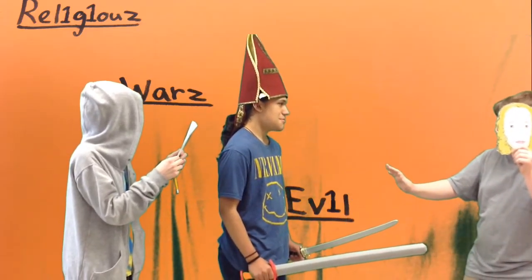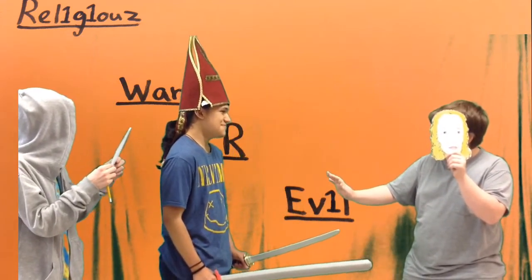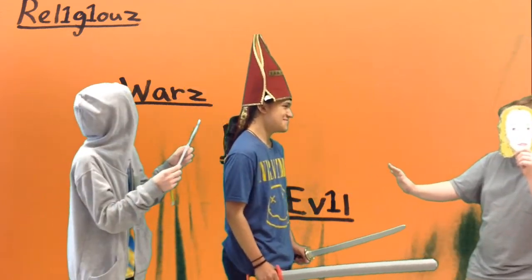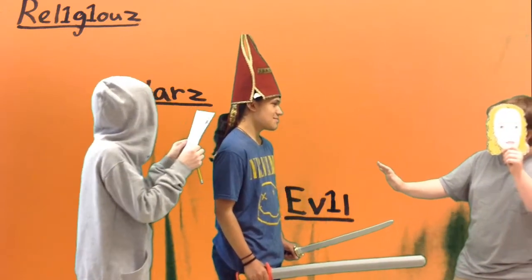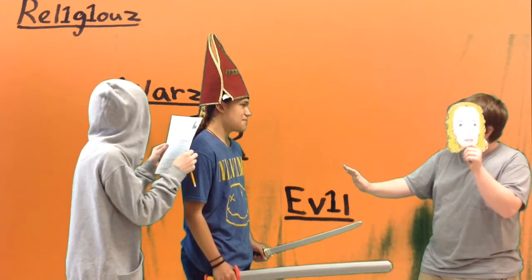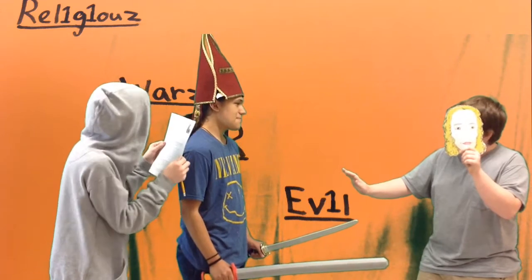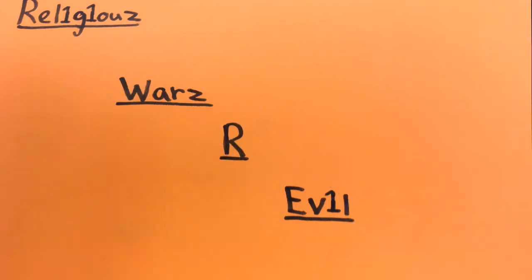Voltaire thought religious wars were the source of evil. Voltaire agreed with the idea of separation of powers made by Montesquieu. Voltaire wanted to reform society to improve justice and human happiness. He also valued freedom of thought, speech, expression, and religious tolerance.